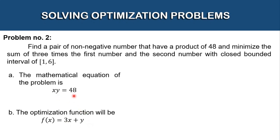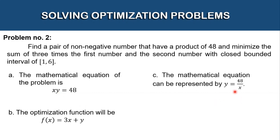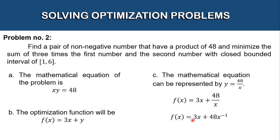We derive the value of y from x · y = 48 by dividing both sides by x, giving y = 48/x. Substituting into the optimization function, f(x) = 3x + 48/x. We can also write this as 3x + 48x⁻¹ so that we can easily find the derivative in the next step.